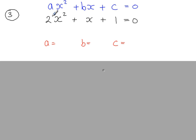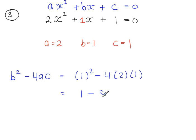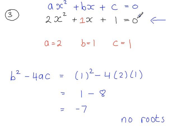In this example, a is equal to 2, b is equal to 1 (since there is a 1x term), and c is equal to 1. Putting these values into the discriminant b squared minus 4ac: 1 squared is 1, minus 4 times 2 times 1 is minus 8, giving 1 minus 8 equals minus 7. This is a negative number, so if the discriminant is negative, we have no roots. That means this equation has no solutions — there is no value of x that will make the equation equal to 0.